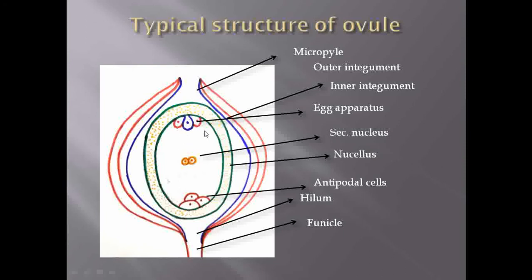In cleavage polyembryony, whenever there is a cleavage in the egg cell, in the zygote, in the synergid cells, in the secondary nucleus, or in the antipodal cells — and if there is a formation of embryo due to the cleavage of cells present in the embryo sac — that type of polyembryony is called cleavage polyembryony.